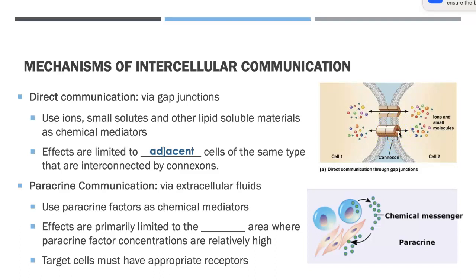Then we have our paracrine communication through our extracellular fluids. Even though this communication is moving through fluids, these cells still have to be near one another. In fact, the prefix 'para' means next to or side by side. We use paracrine factors as chemical mediators, and the effects are primarily limited to the local area where concentrations will be pretty high. Target cells have to have the appropriate receptor — imagine them extending out on what appear to be smooth muscle cells.